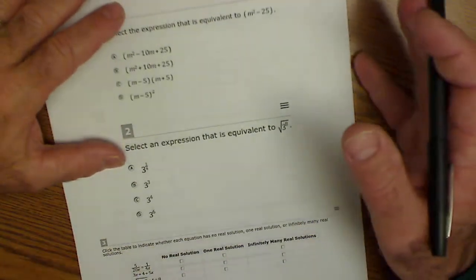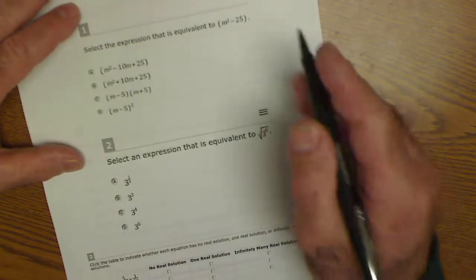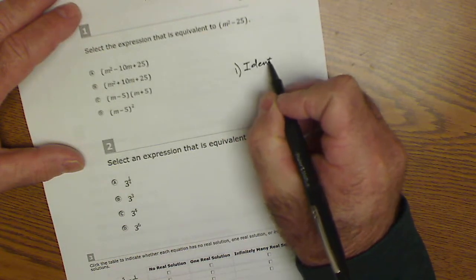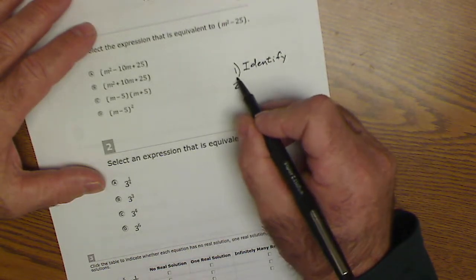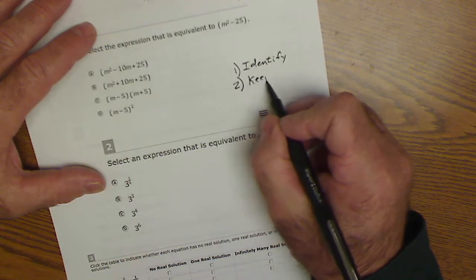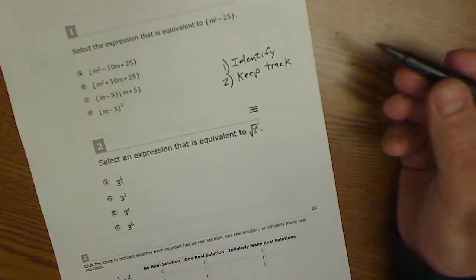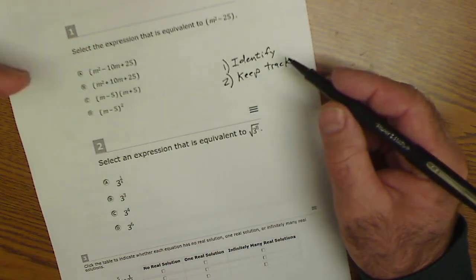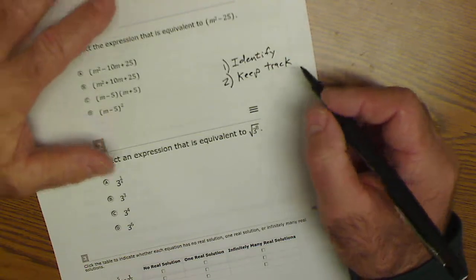So really, there are three primary strategies I would recommend. Number one is really identify what they're asking you. So really try and identify the point of the question. Number two is keep track of time. Hardest problem on here, about the same weight as the easiest problem on here. So you don't want to spend a lot of time on a really hard one and race through the easier ones. So keep track of time.